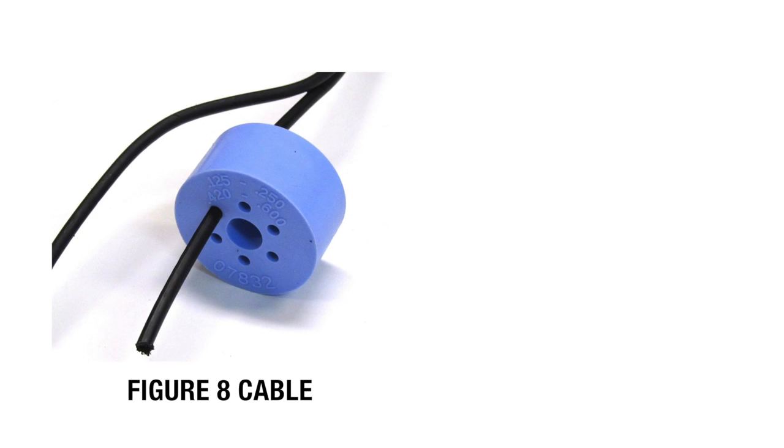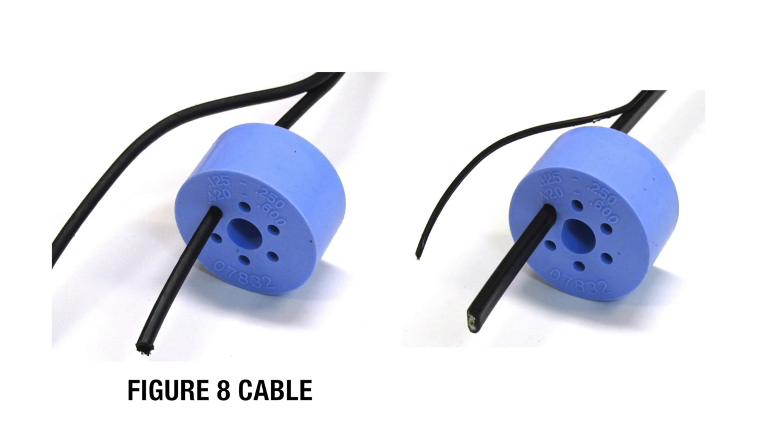When installing figure 8 style cables and cables with tracer wires, remove the tracer wire or ground wire from the portion of the cable that will be positioned in the grommet and insert the cable into the grommet.